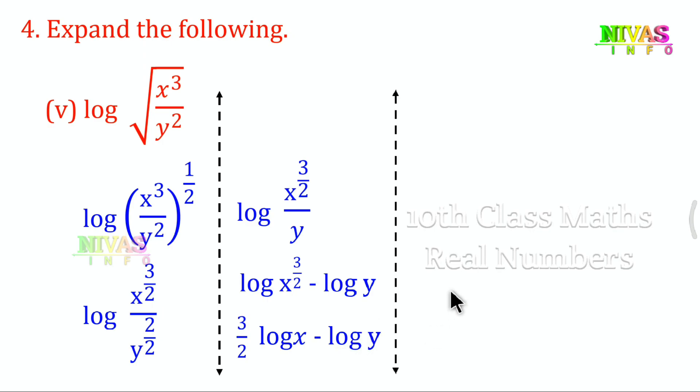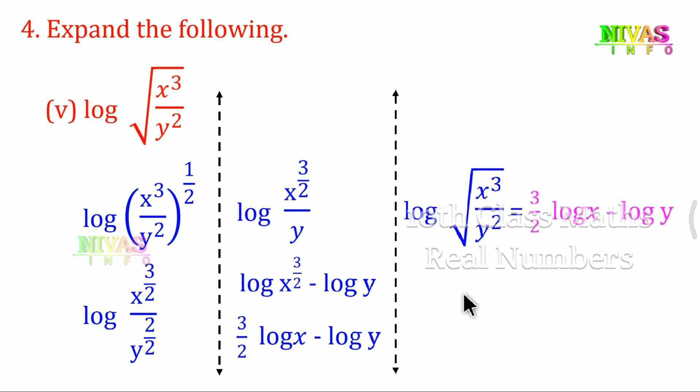So the answer is: log √(x³/y²) equals (3/2) log x minus log y.